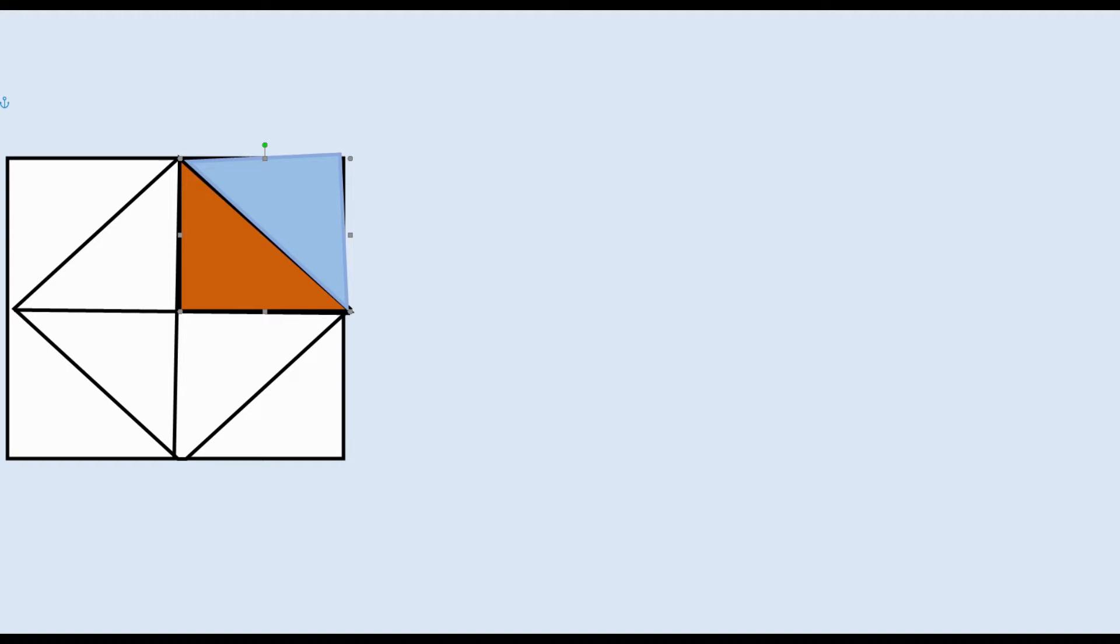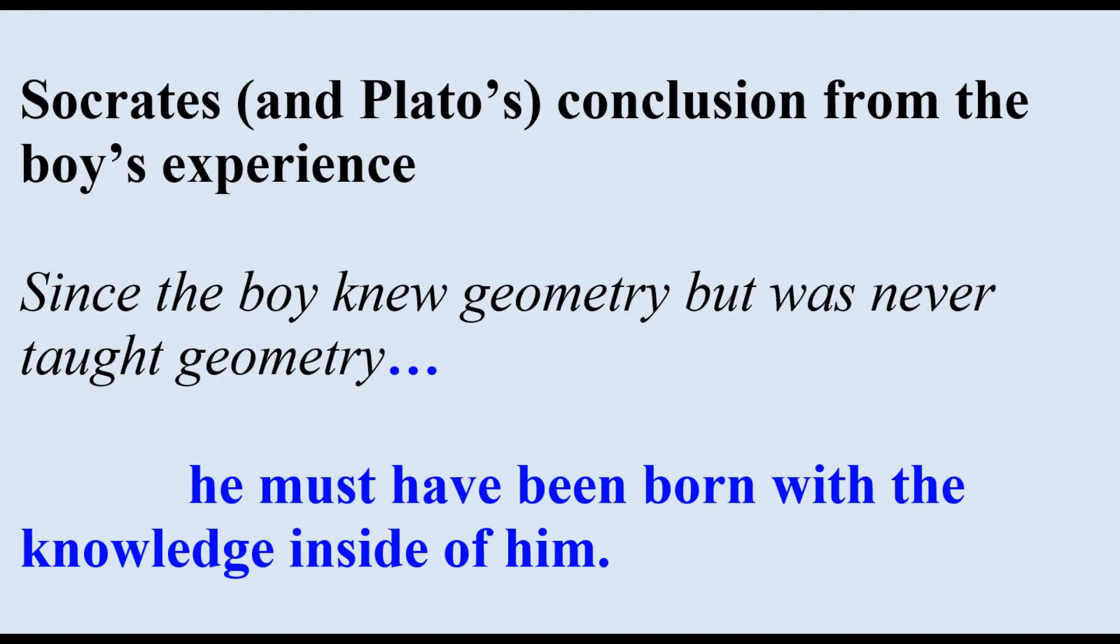The boy realizes that each inner triangle has a correspondingly equivalent outer triangle and ultimately realizes that this is how you double the size of a square, not, as he originally thought, by doubling the size of every line in the square.